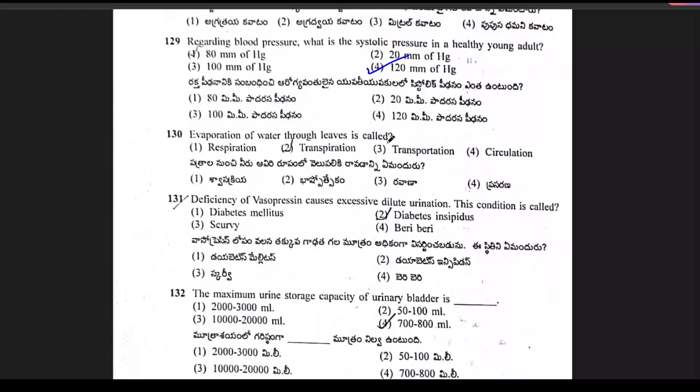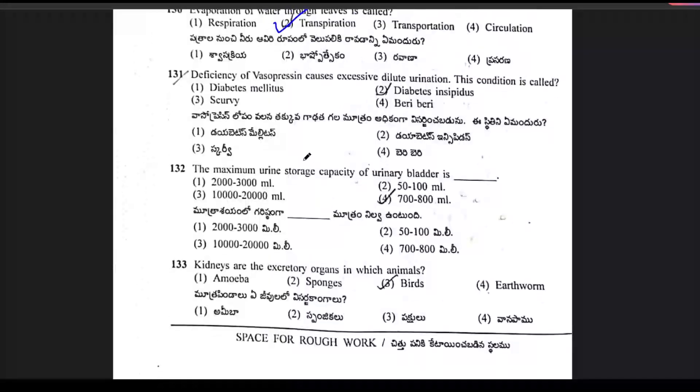Question 130: evaporation of water through leaves is called — this process is known as transpiration. Option 2 is the right answer.